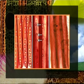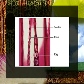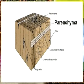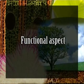Rays in gymnosperms may be homocellular, comprising parenchyma only, or heterocellular, comprising parenchyma and tracheids. Ray tracheids are distinguished from ray parenchyma by bordered pits and absence of protoplasts, occurring singly or in rows at upper or lower edges of rays or scattered among parenchyma cells. In the large majority of gymnosperms, rays are uniserate and 1 to 60 cells high. If a resin duct passes through the center of a ray, it is called a resiniferous ray.